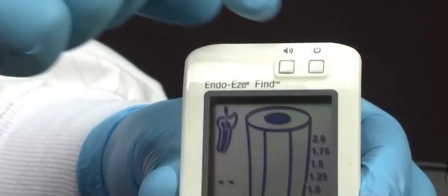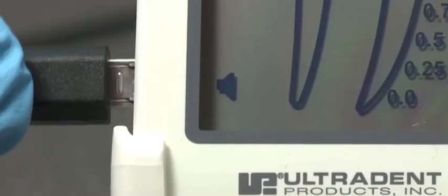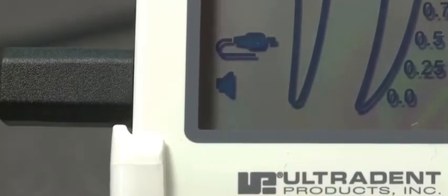Now get ready to perform the electronic measurement by turning the apex locator on. Plug the measurement cable into the left side of the device and make sure that the cable icon appears on the bottom left corner of the display.